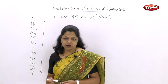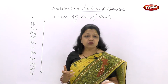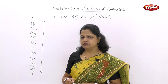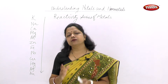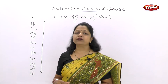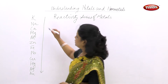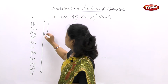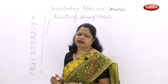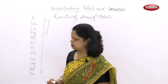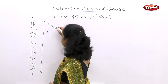Now based on this series, we are going to divide them into three categories. We are going to divide them because based on those categories, we are going to decide what will be the process of metallurgy. The first four — potassium, sodium, calcium, magnesium — are quite reactive as compared to others.